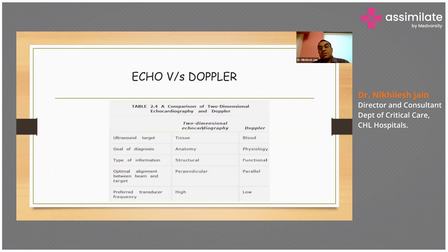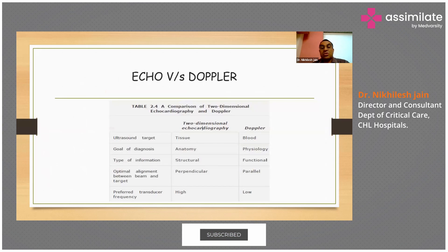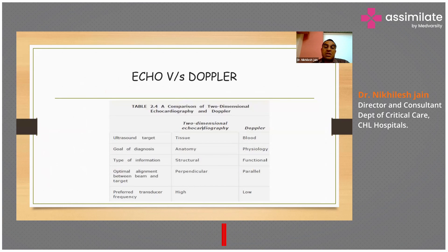The key differences between 2D echo and Doppler: the ultrasound target in 2D echo is tissue, whereas in Doppler it is blood. The goal of 2D echo is to delineate anatomic details, while Doppler provides physiologic details. 2D echo gives structural information whereas Doppler gives functional information. Optimal beam-to-target alignment is perpendicular in 2D echo and parallel in Doppler. The preferred transducer frequency is high for 2D echo and low for Doppler.